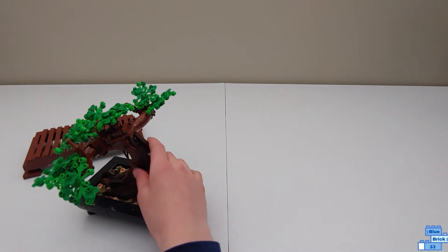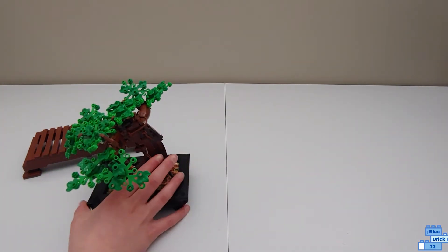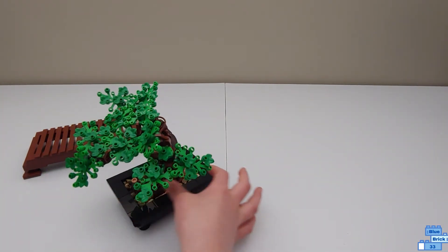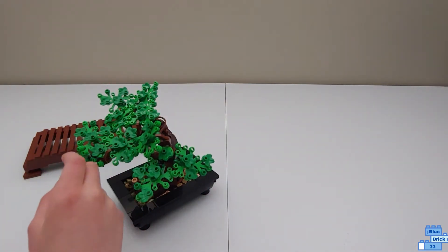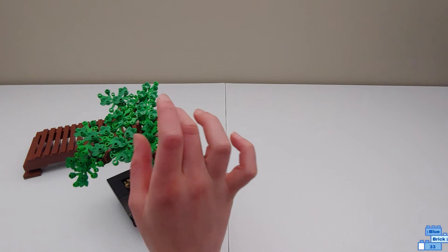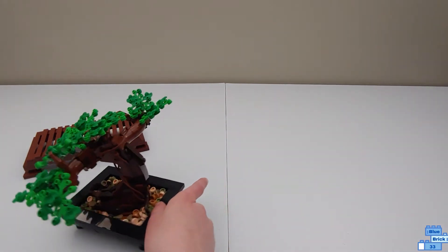It has these bendy pieces going around the tree part. Now on the top is just a bunch of the leaf pieces with more tiny leaves on top. Two different shades of green so that's pretty cool.